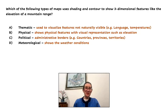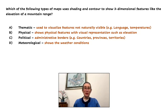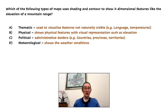Which of the following types of maps uses shading and contour to show three-dimensional features like the elevation of a mountain range? A, thematic. B, physical. C, political. Or D, meteorological.